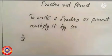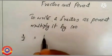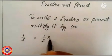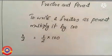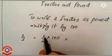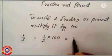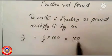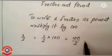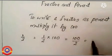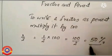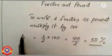First question: 1 by 2. For converting 1 by 2 into percentage, multiply 1 by 2 into 100. That is 1 into 100 is equal to 100 by 2. 100 by 2 is equal to 50. Therefore 1 by 2 is equal to 50 percentage.